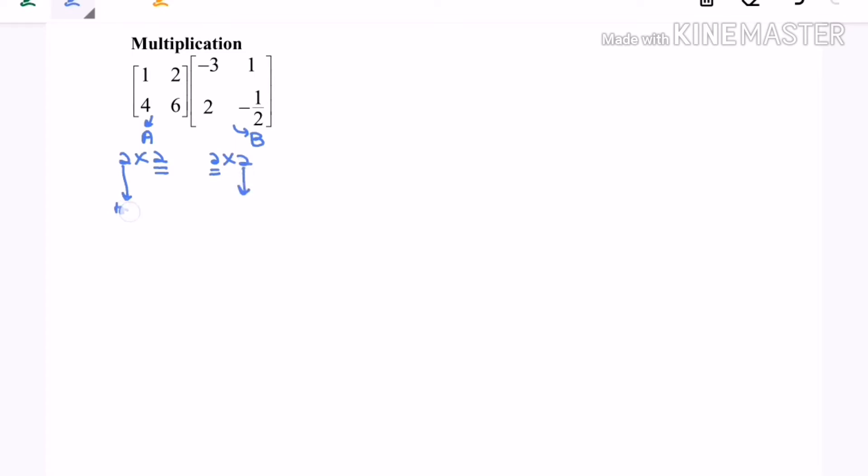So this is a row, this is a column. So this one will be our product. So A multiplied with B will have order 2 by 2. So the product AB will have a 2 by 2 matrix.